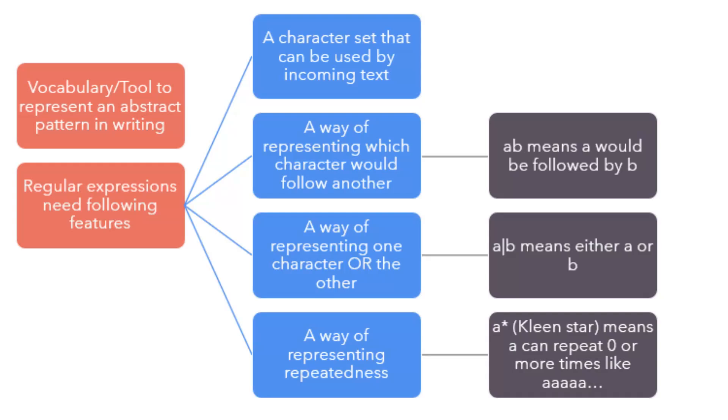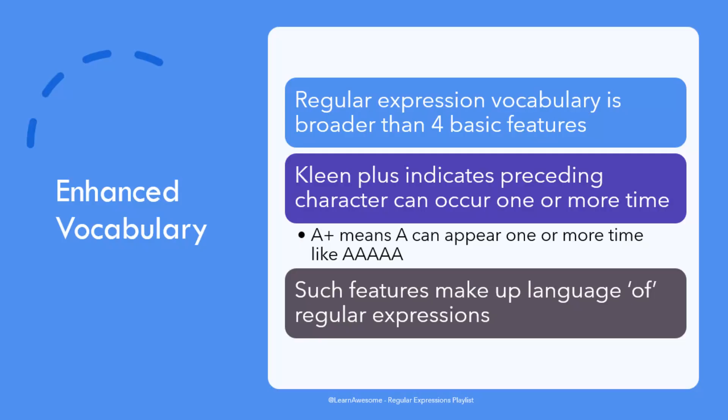For example, a phone number has repeating digits of known length separated by one of the available separators, and the character set is limited to numbers, plus sign, brackets, and separating characters. In practical usage the list doesn't end there — for example, the Kleene star is complemented by Kleene plus, which indicates the preceding character can occur one or more times, making at least one occurrence mandatory, unlike Kleene star where occurrence is optional. With this, you are starting to get an idea of what kind of language regular expressions are written in, and we can look at some ultra-basic examples.